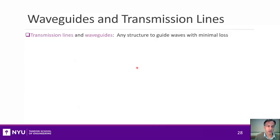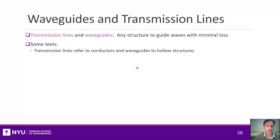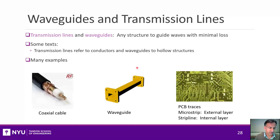Before we talk about antennas, let's introduce the terminology of a transmission line or a waveguide — any structure to guide EM waves with minimal loss. In some cases, a transmission line refers to a conductor and a waveguide to a hollow structure. A classical coaxial cable, like one you'd use to connect to a TV, is an example of such a transmission line or waveguide.